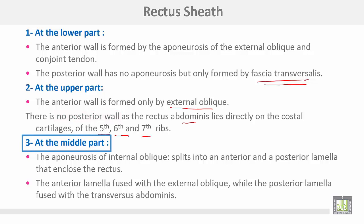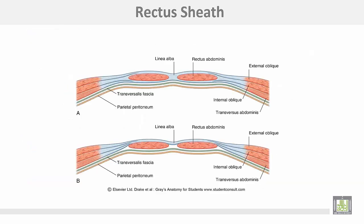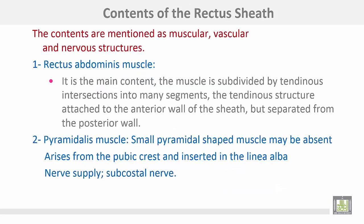At the middle part, the aponeurosis of the internal oblique is split into two laminae — anterior and posterior. The anterior lamella fuses with the external oblique, while the posterior lamella fuses with the transversus abdominis muscle. That is to say, the anterior wall is formed by one and a half muscles, and the posterior wall is also formed by one and a half muscles.